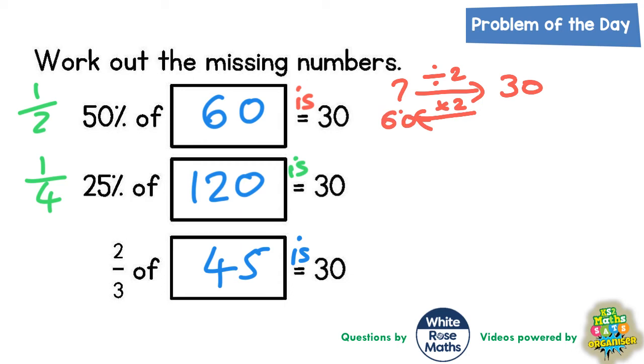For the second one, if we're finding 25 percent of a number, that must mean we must have a mystery number which has been divided by four, because 25 is a quarter and a quarter is divided by four.